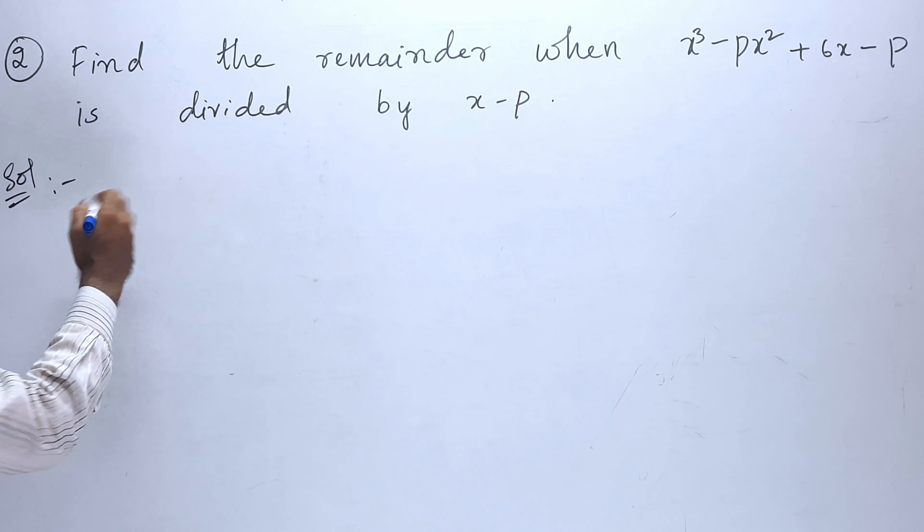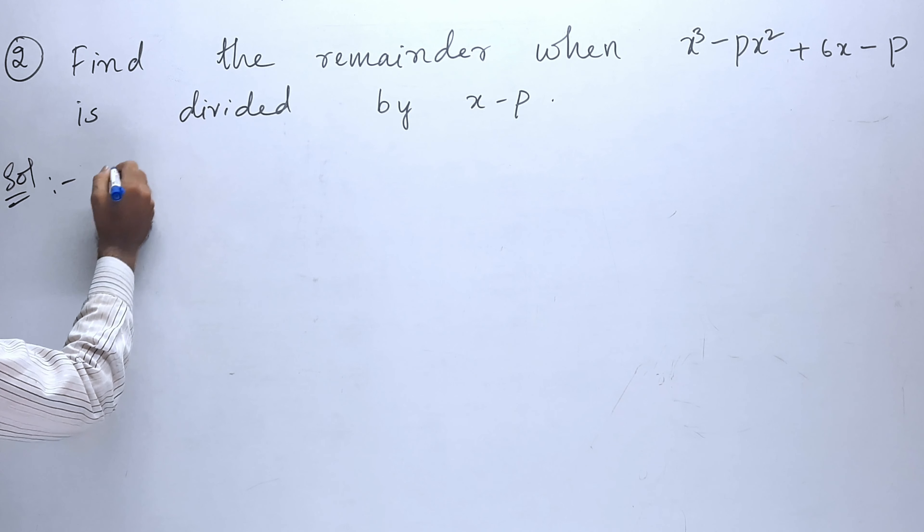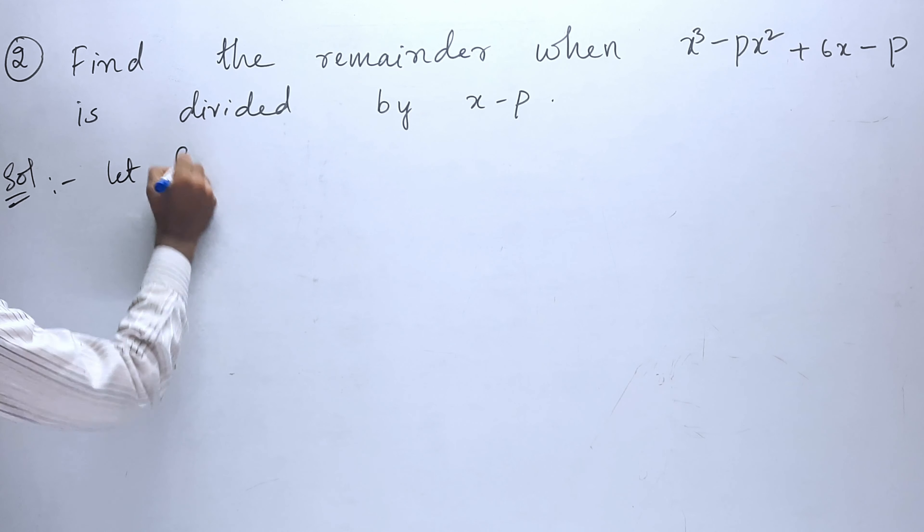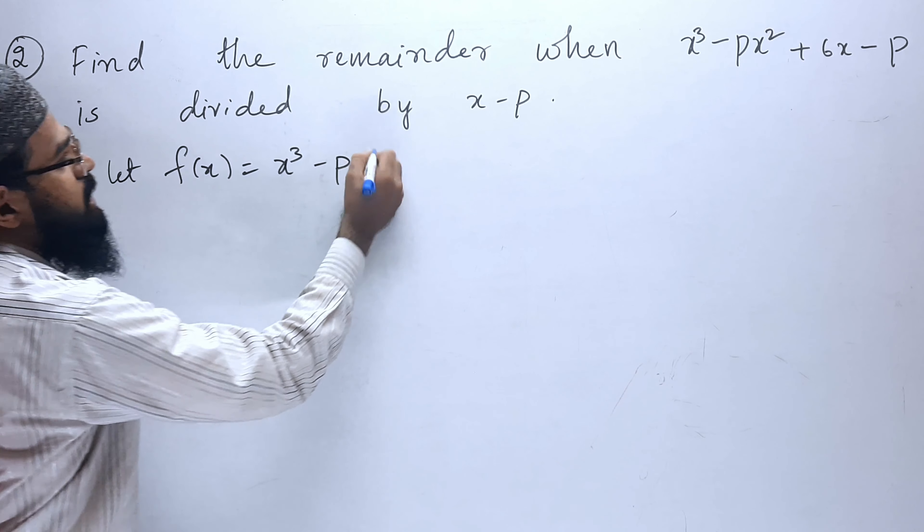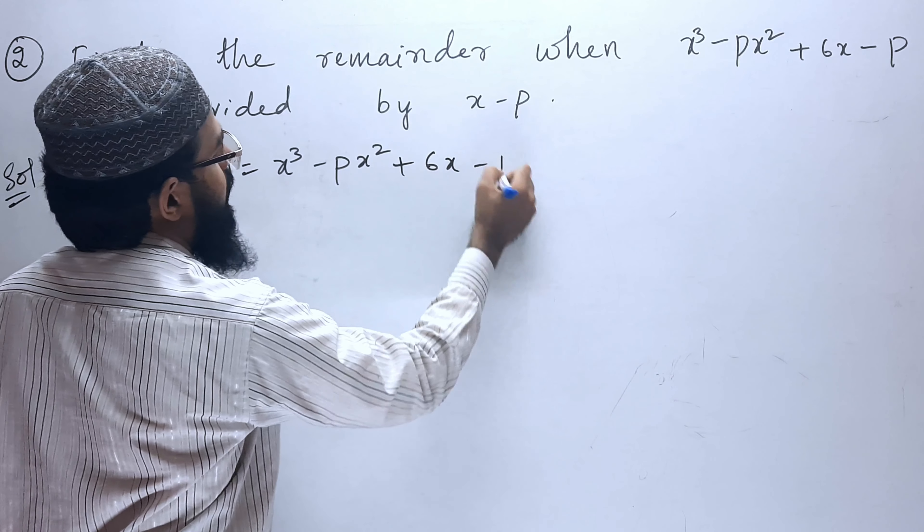So, let us write the given. The big polynomial, let it be f of x equals x cube minus px square plus 6x minus p.